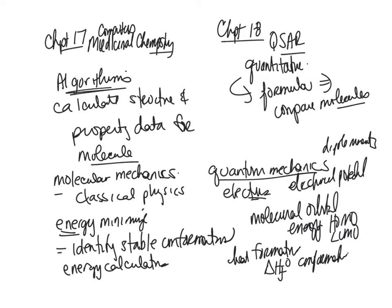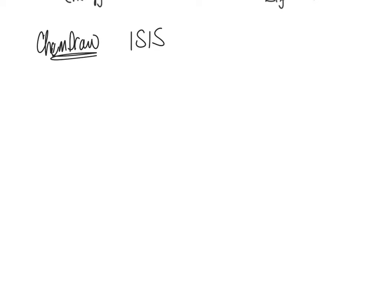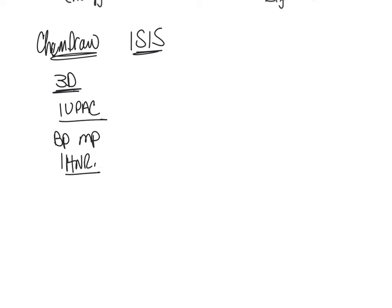Each one of these is evaluated by computer tools. Another computer tool is ChemDraw — there are different types, and ChemDraw is a chemistry drawing program. In industry, a program called ISIS is a little different. These computer programs can help you draw structures, view them in 3D, predict IUPAC chemical names, predict boiling points and melting points, proton NMR, carbon NMR peaks, and predict IR peaks. Those computer packages are really good and help you with viewing 3D molecules.